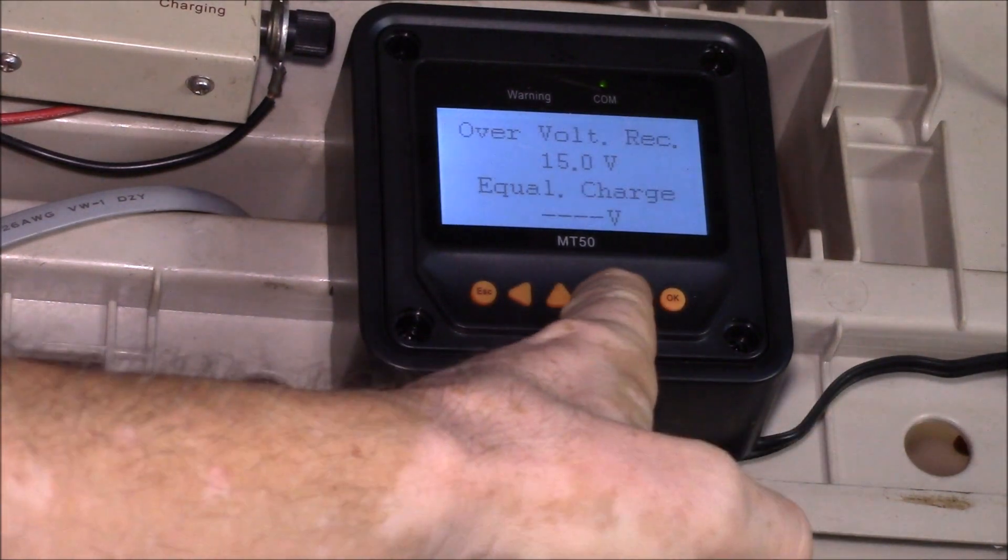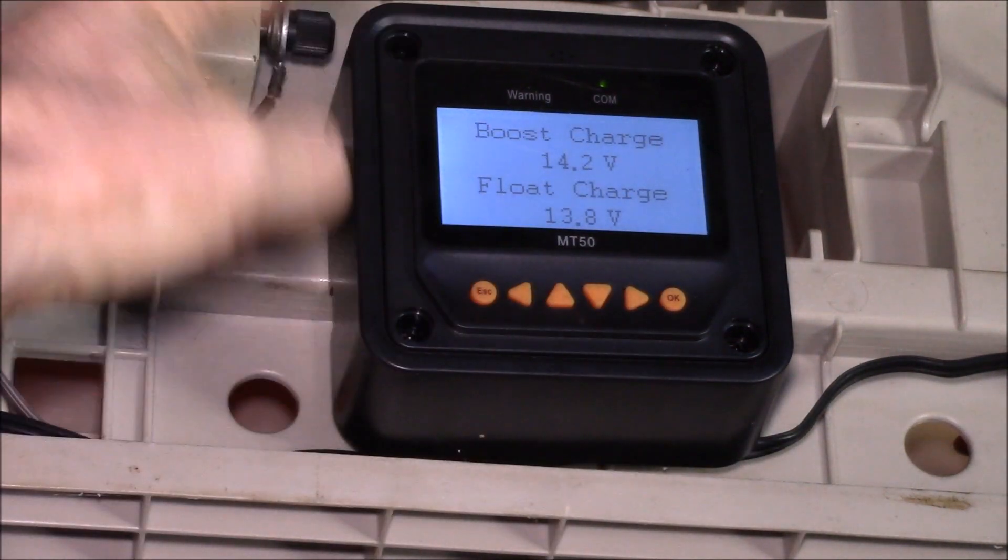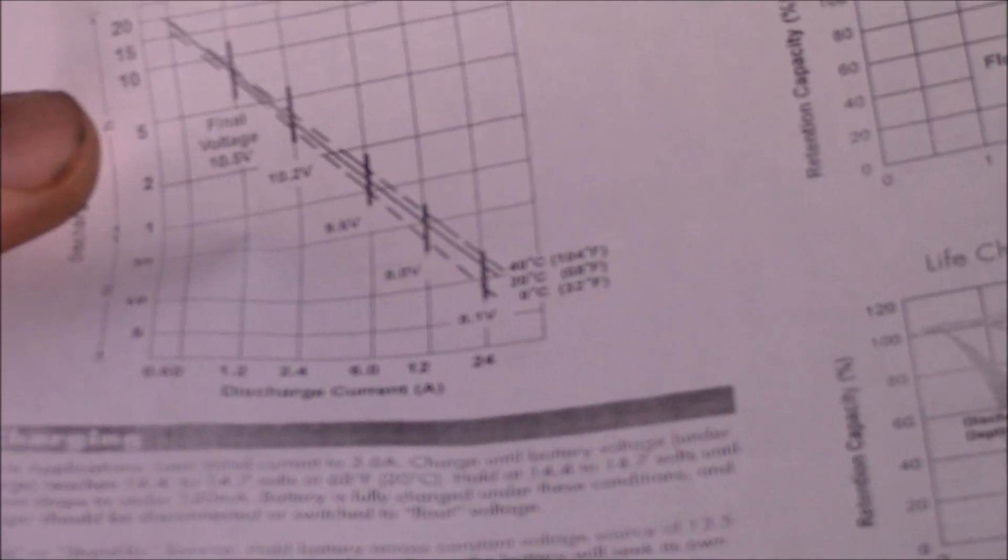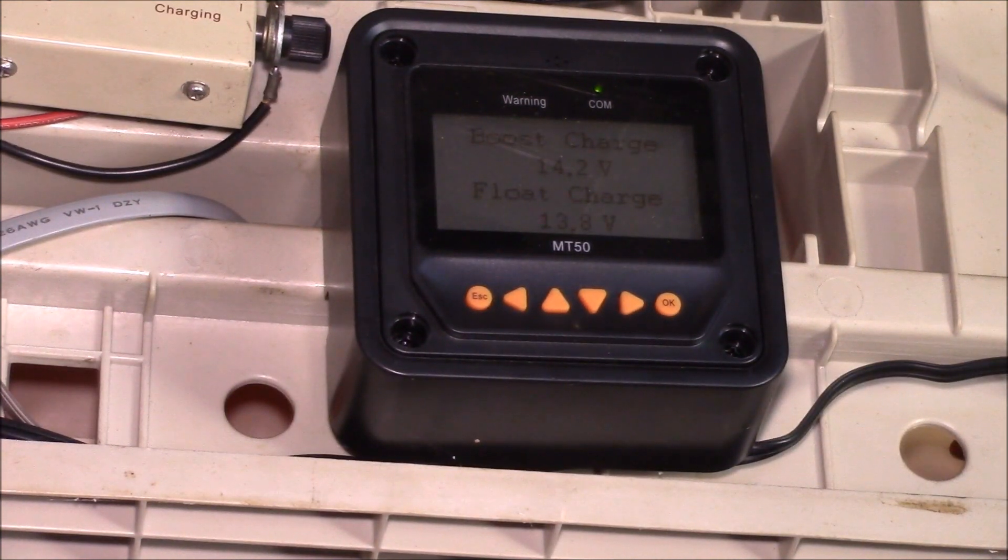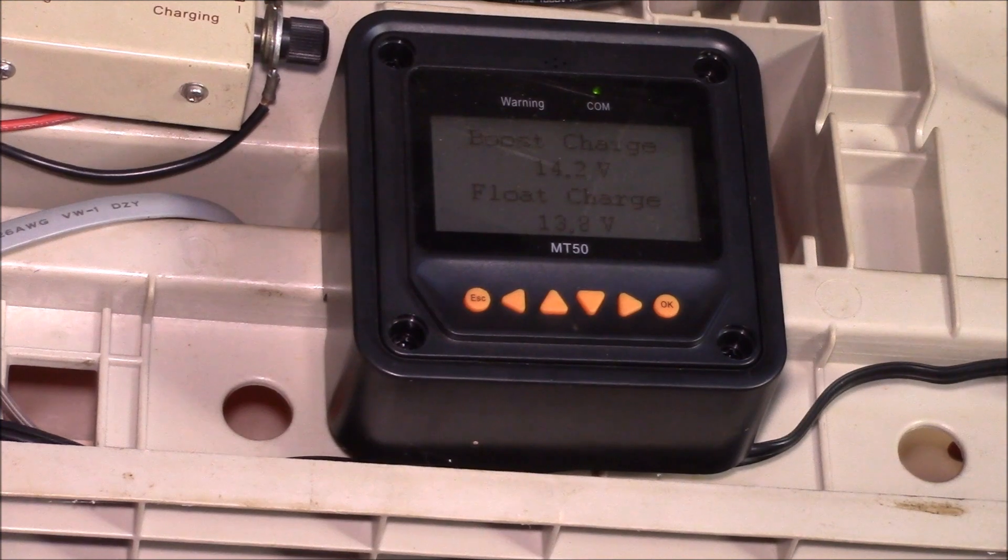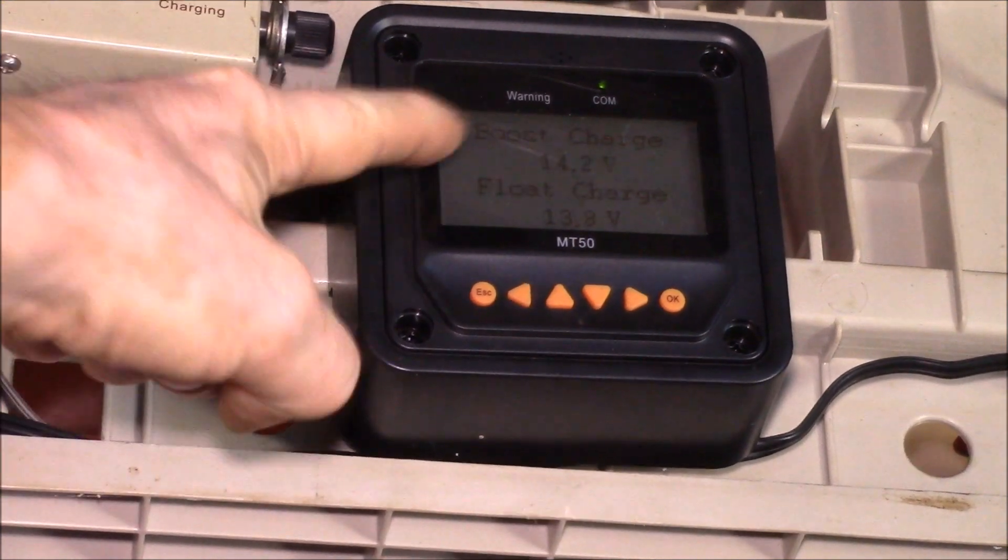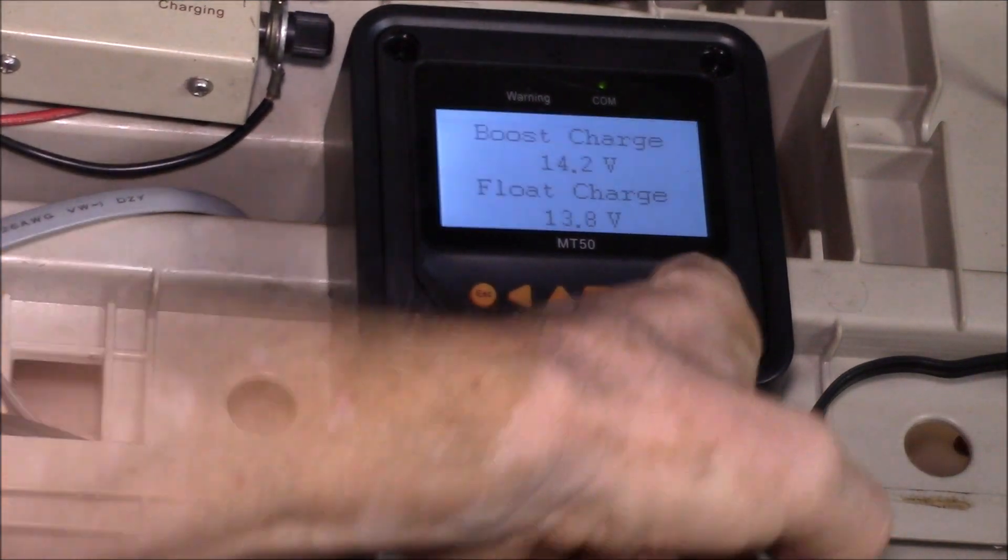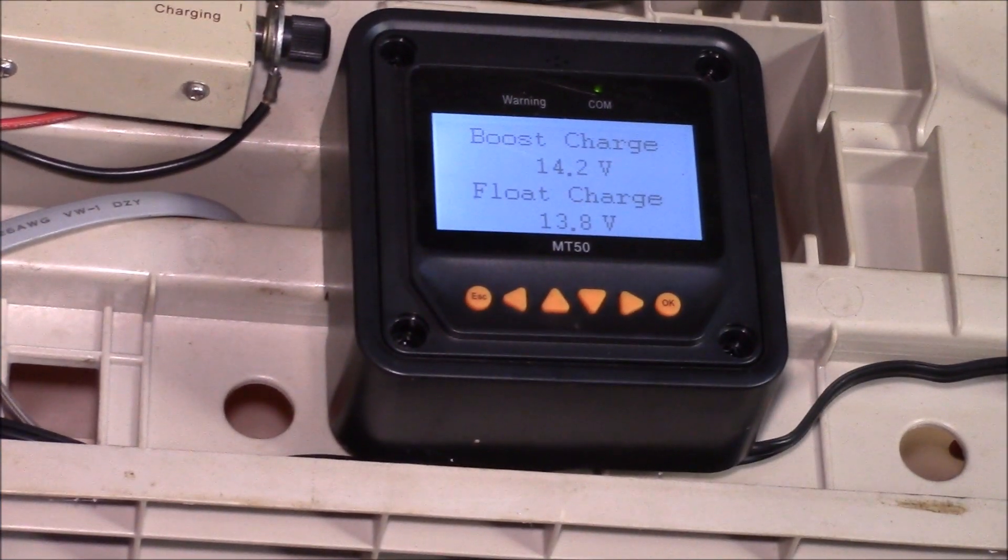Let's say I want to go down here and I want to change my boost charge voltage, because I was looking at the Power Sonic data sheet and they give some charging voltages. They said the boost charge should be 14.4 to 14.7, so I'm a little bit low. The float voltage is right, they said 13.5 to 13.8, but I would like to raise that boost voltage. So let's go there, I'll hit OK - I can't change that voltage.